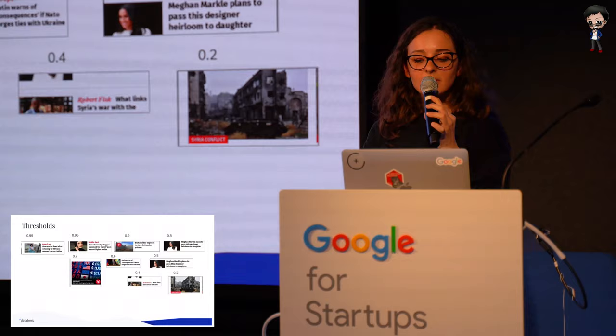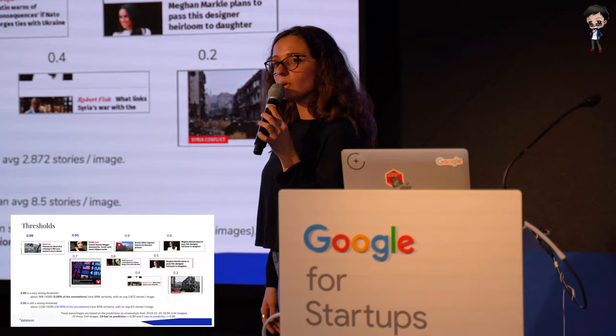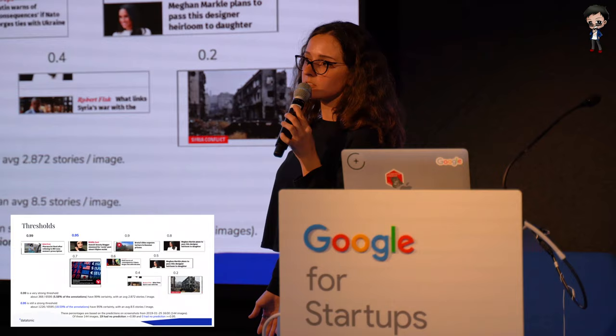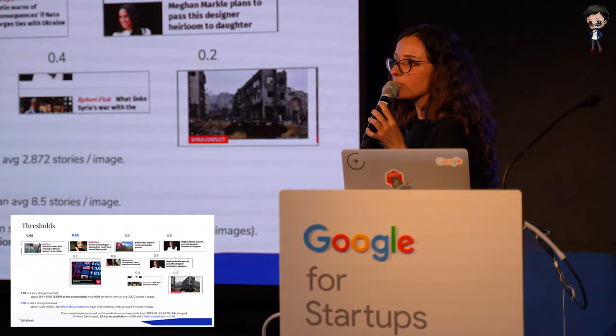After some data analysis, we figured out that the best threshold in this case was 95% confidence, because for each webpage screenshot we would always have at least one story predicted correctly — so there was no information lost on the general topic. At 99% threshold, of course the quality was the best, but we had some instances where we didn't have any story for a news page, so it wasn't really worth it.